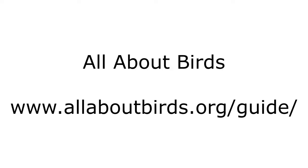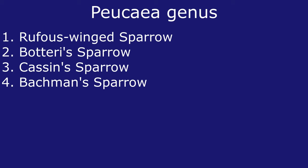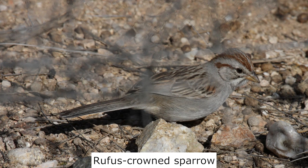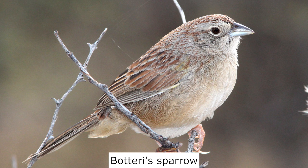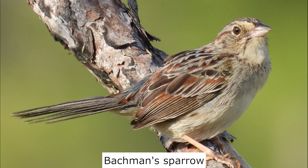I've included links to each species from the All About Birds website in the video description. Use the range maps to see if a species occurs where you live. The native sparrows are also known as New World sparrows. I've grouped them by genus and ordered them by their taxonomy. The sparrows in this first genus are not likely to be found near house sparrows due to habitat differences. The rufous-crowned sparrow is found in southern Arizona in the Sonoran Desert. The Botteri's sparrow is found in southern Arizona in desert grasslands. The Cassin's sparrow is found in the dry grasslands of the southern Great Plains and southwestern United States. The Bachman's sparrow is found in grassy pinelands in the southeastern United States.